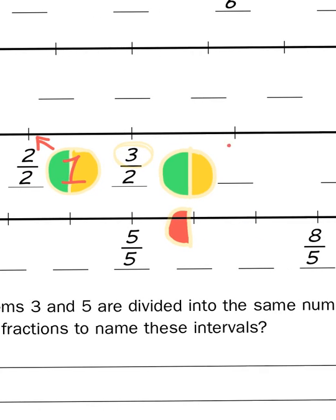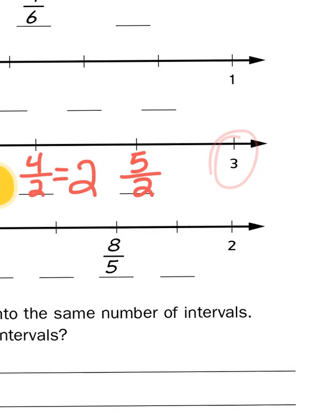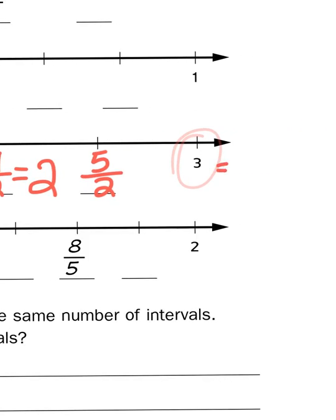So what would come after three halves? Well that would be four halves. Or 4/2 which is equivalent to two wholes. And what comes after four halves? Well you probably guessed it. Five halves. And three wholes is equivalent of six halves.